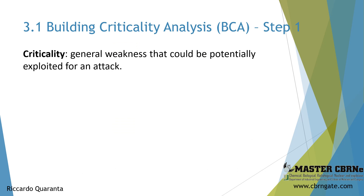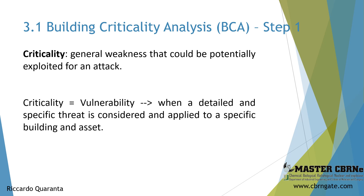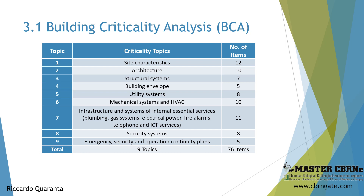Criticality is intended as a general weakness that could be potentially exploited for an attack. In this approach, criticality becomes a vulnerability when a detailed and specific threat is considered and applied to a specific building and asset. It is important to observe that not all criticalities generate a correspondent vulnerability — this correlation depends on the specific threat, asset and building considered. The analysis in step one can be considered as a preliminary assessment of the weaknesses of different aspects of the building site, structure and functions, and also allows for the evaluation of design issues that could potentially reveal exploitable vulnerabilities.